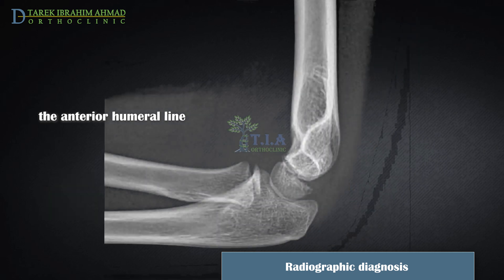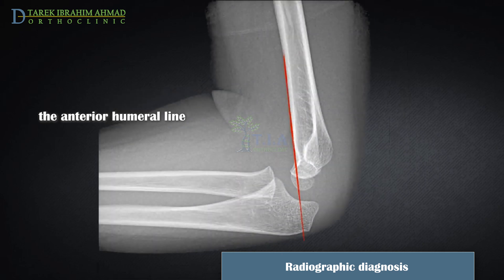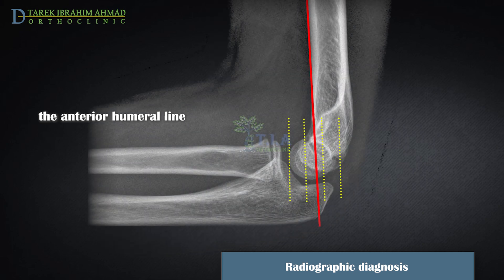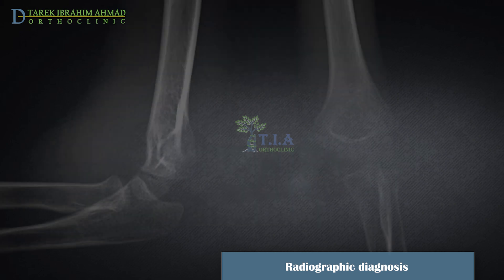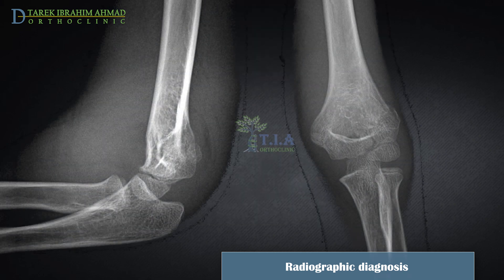In a normal elbow, the anterior humeral line should traverse the capitellum in its middle third. In a displaced fracture in extension, the line will pass anteriorly or may not even cross the capitellum. In a flexion-type fracture, the line passes posteriorly to the capitellum. Diagnosis of displaced fractures is usually evident, but diagnosis of minimally or non-displaced fractures can be challenging.